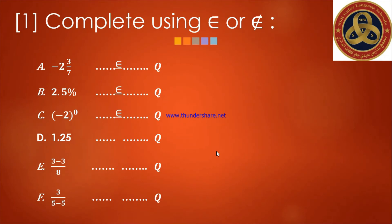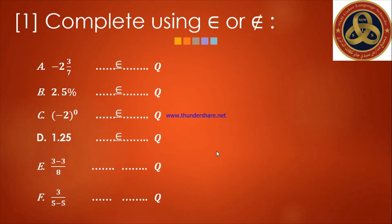Letter D: one point two five is a decimal form, and the decimal form is a rational form, so it belongs. Letter E: three minus three over eight — subtracting three minus three on the numerator gives zero, so zero over eight equals zero, which is a whole number — it belongs. Letter F: three over five minus five — subtracting five from five in the denominator gives three over zero, which is meaningless because the denominator equals zero — so it doesn't belong.